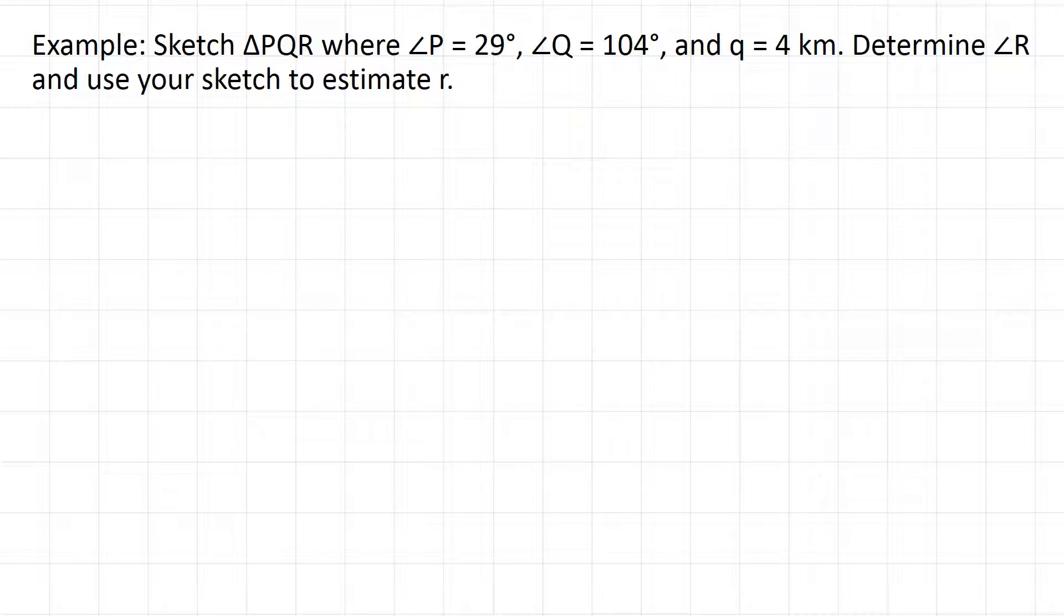So to start with, we're told to determine angle R, not estimate it, and that's because we have the other two angles in the triangle. So if all three angles in the triangle have to be 180, well then angle R is going to be equal to 180, subtract the other two angles that we know. So subtract 29 minus 104, and we should be left with just angle R. So if we run through that subtraction, we get that angle R is 47 degrees, and now we know all three angles in our triangle.